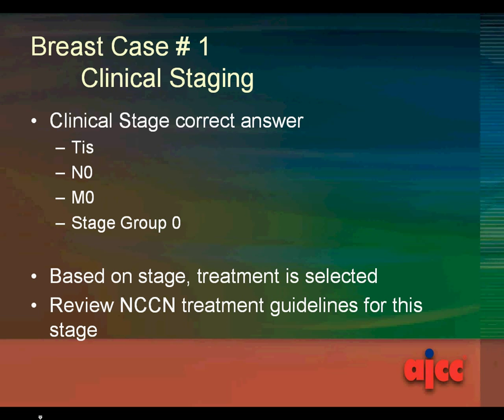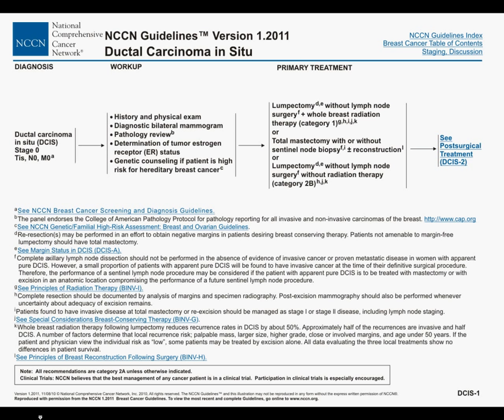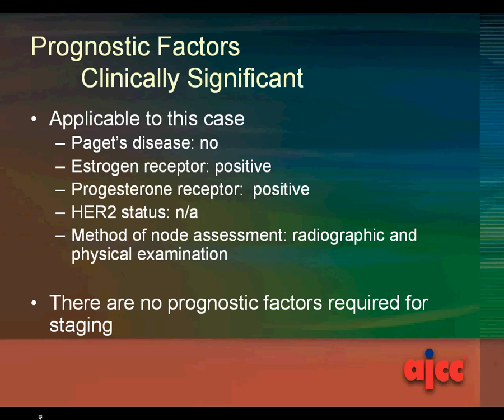Based on this stage, the treatment is selected, and you should review NCCN or other treatment guidelines for this stage. The clinically significant prognostic factors applicable to this case are: Paget's disease — no; estrogen receptor positive; progesterone receptor positive; HER2 status is not applicable; and the method of node assessment is radiographic and physical exam. There are no prognostic factors required for staging.